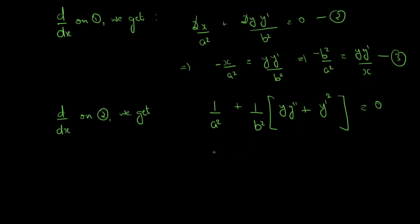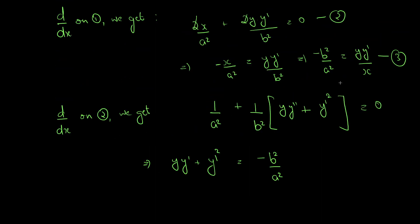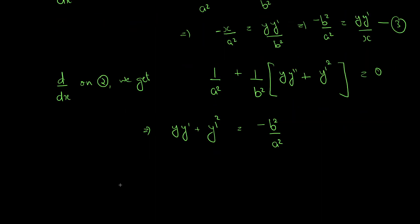Rearranging, we can write y · y'' + y'² = − (B² / A²) · (1/B²) ... bringing this to − B²/A². From equation 2, we have the expression for − B²/A², so substituting using equation 3, this becomes y · y'' + y'² = y · y' / x.